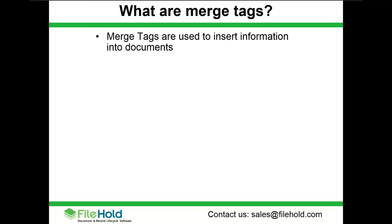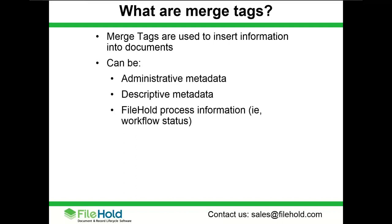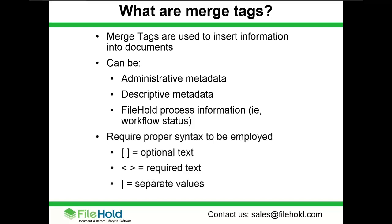We can also leverage that information for an autofiling rule, which is where we're going to be looking at today. Those merge tags can be administrative or descriptive metadata. They can also be FileHold process information such as the workflow status — whether something was approved or not approved — and we can use that as information as well.